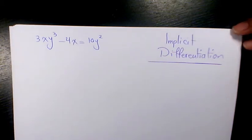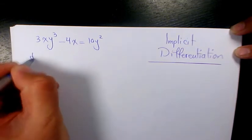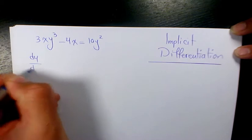What's up guys, this is Massey, welcome to another video. In this video I want to show you how to find the derivative of 3xy³ minus 4x equals 10y². I need to use implicit differentiation.